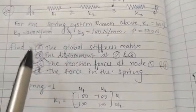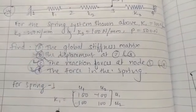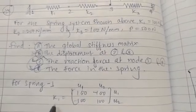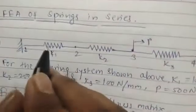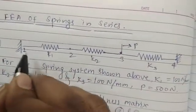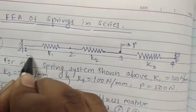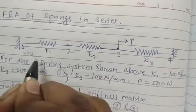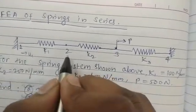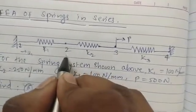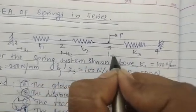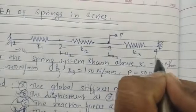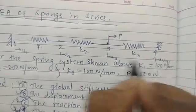To find the stiffness coefficient, I will first write the displacements for every element. At node 1, displacement is u1; at node 2, it is u2; at node 3, it is u3; and at node 4, it is u4. These are the respective displacements at the nodes.